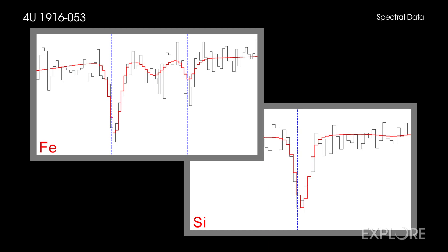However, the wavelengths of these characteristic signatures of iron and silicon were shifted to longer, or redder wavelengths, compared to the laboratory values found here on Earth.